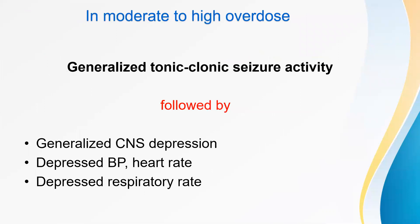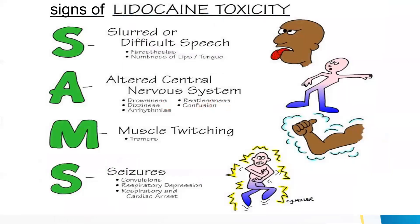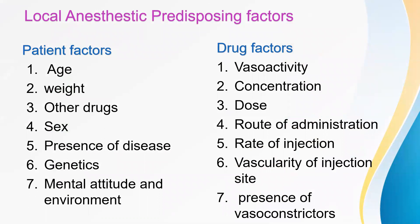Signs of local anesthetic toxicity can be remembered as SAMS: S for slurred or difficult speech, A for altered central nervous system, M for muscle twitching, S for seizures. Local anesthetic predisposing factors include patient factors such as age, weight, other drugs, sex, presence of disease, genetics, mental attitude and environment. Drug factors include vasoactivity, concentration, dose, route of administration, rate of injection, vasculature of injection site, and presence of vasoconstrictors.